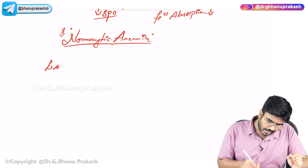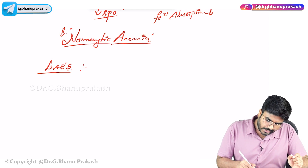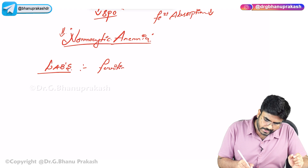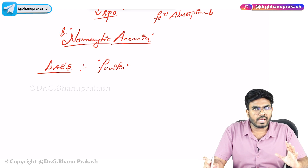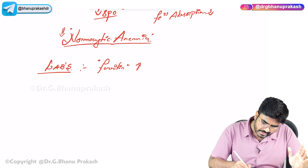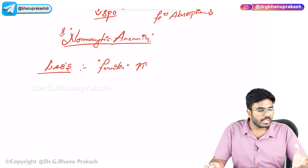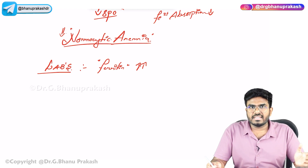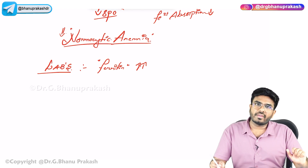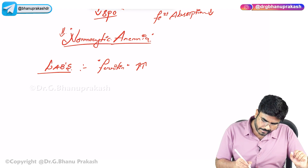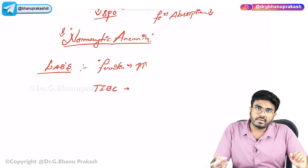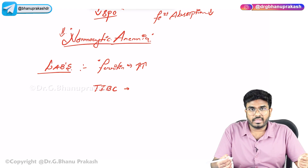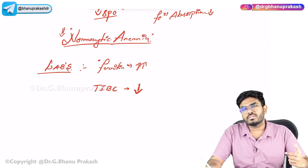Anemia of chronic disease is a normocytic anemia. Looking at the lab values: ferritin levels increase, because all the iron is sequestered and not used for hematopoiesis or hemoglobin production — it is stored in the body. When ferritin is high, TIBC goes down because there are enough iron stores.